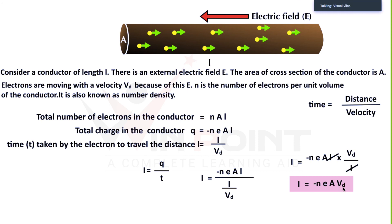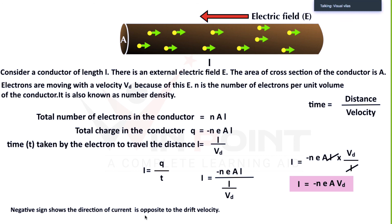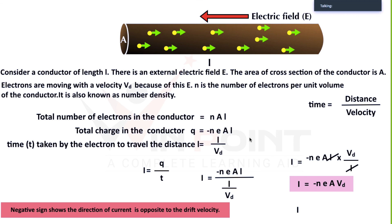Compare the direction of drift velocity and the direction of current. The green arrow shows the direction of drift velocity — these are electrons. If electrons are moving in the right direction, the current will be in the left direction, opposite to the flow of electrons. The negative sign shows that the direction of current is opposite to the drift velocity. If you are not considering direction, you can write I equal to N times e times A times Vd.